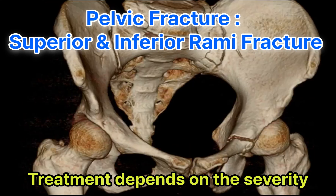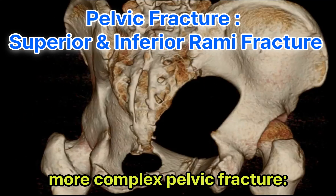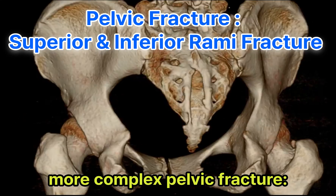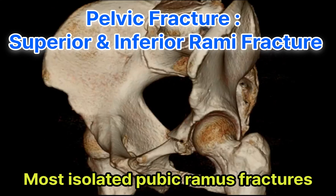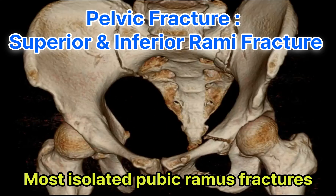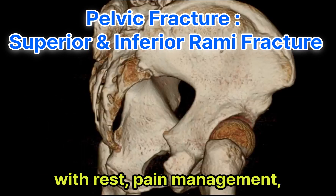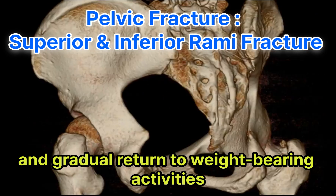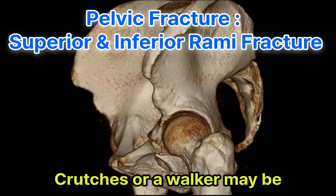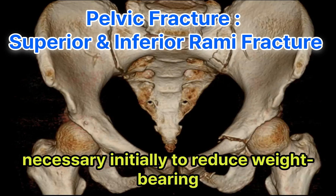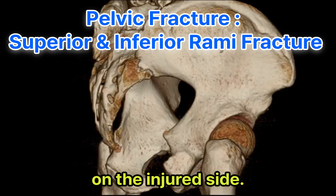Treatment depends on the severity of the fracture and whether it is part of a more complex pelvic fracture. Most isolated pubic ramus fractures can be treated non-surgically with rest, pain management, and gradual return to weight-bearing activities as tolerated. Crutches or a walker may be necessary initially to reduce weight-bearing on the injured side.